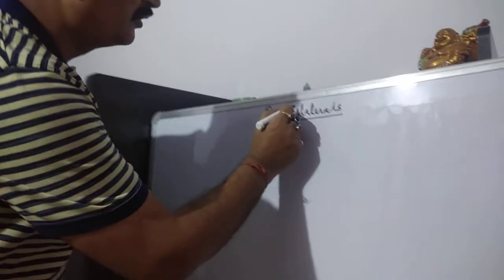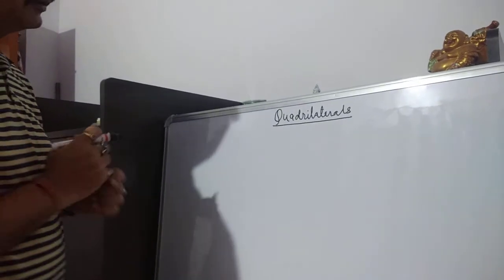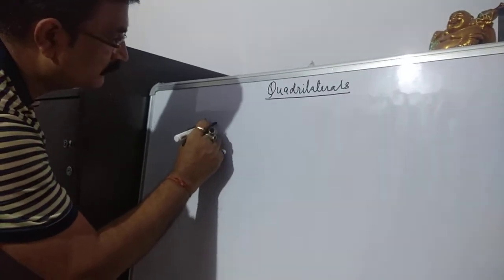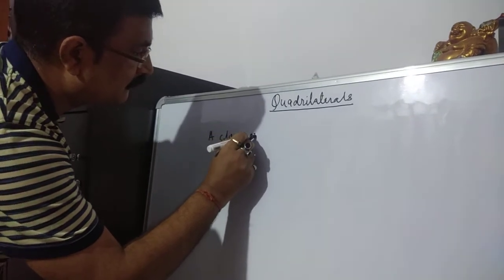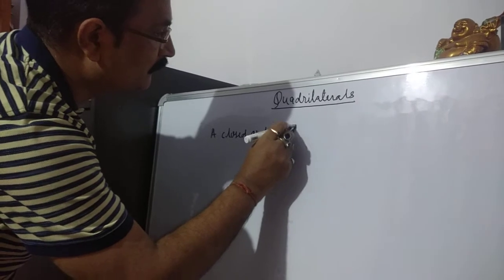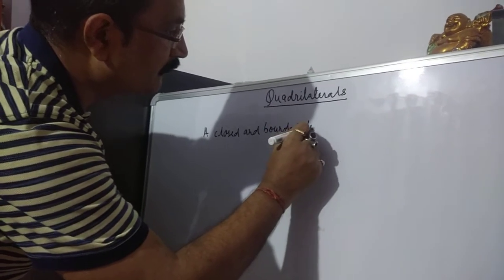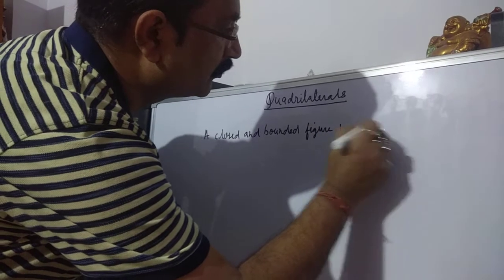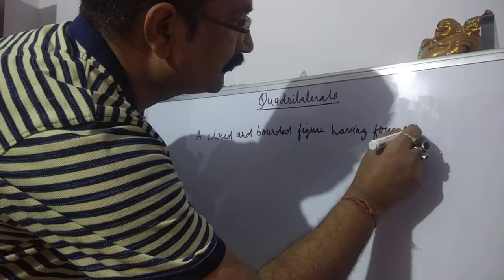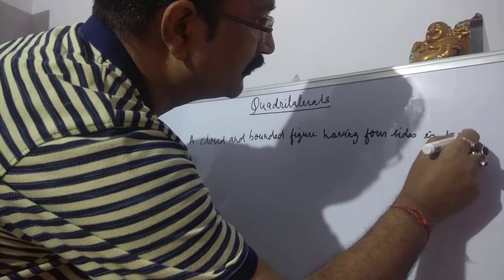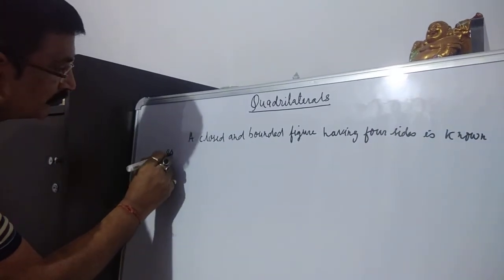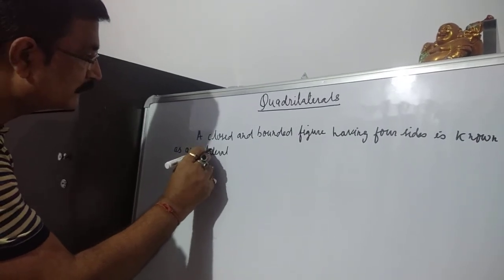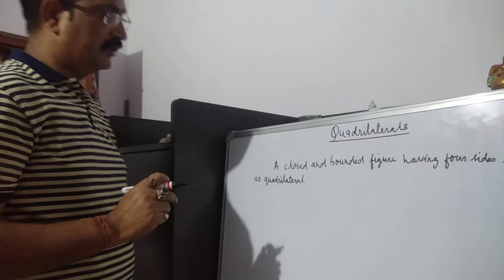So what is a quadrilateral? How can you define quadrilateral? It is a closed and bounded figure having 4 sides. It can also be defined as a polygon having 4 sides.